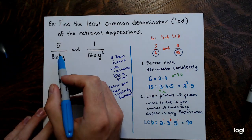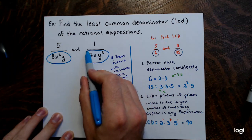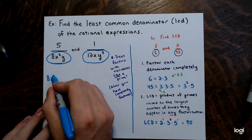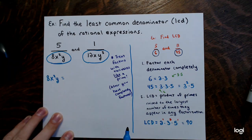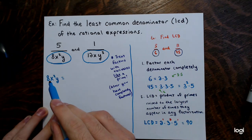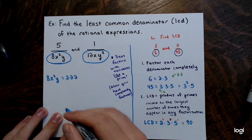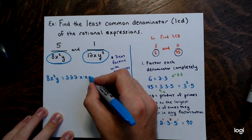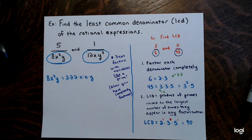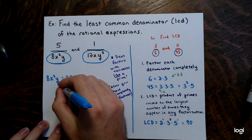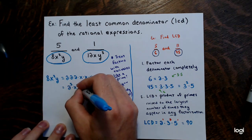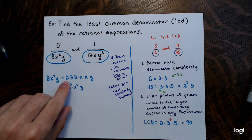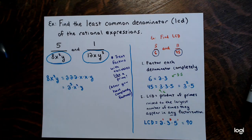Taking the denominators 8x squared y and 12xy cubed, we factor each completely. 8x squared y breaks down as 2 times 2 times 2 times x times x times y, or equivalently 2 cubed times x squared times y. And 12xy cubed breaks down as 2 times 2 times 3 times x times y times y times y, or 2 squared times 3 times x times y cubed.